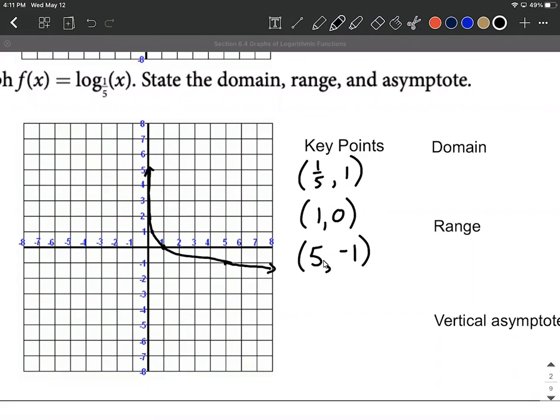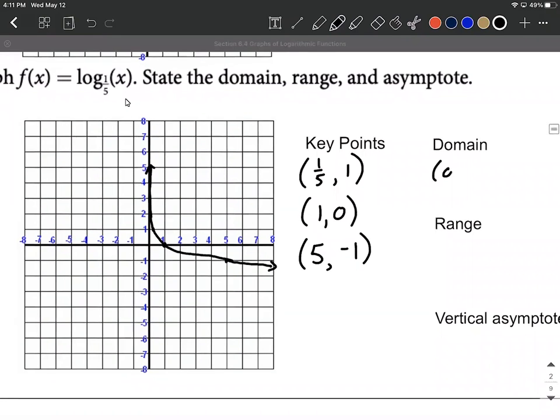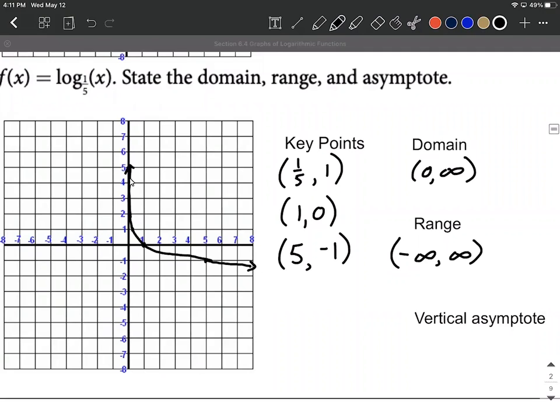Now the domain - you're only allowed to plug in positive values into a logarithmic function, so we're going to say 0 to infinity. Our range goes from negative infinity to positive infinity on every one of these logarithmic functions. And then our vertical asymptote - the vertical asymptote is right here at the y-axis. It always starts on these logarithmic functions with the parent function, like we're graphing right here, at the y-axis. Sometimes we move it around using transformations, but in this case, it's going to be at x equals 0, the equation of this vertical line at the y-axis.